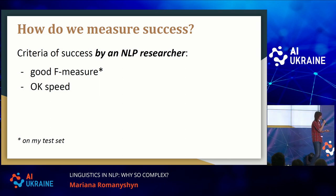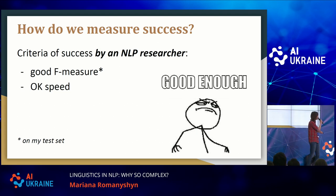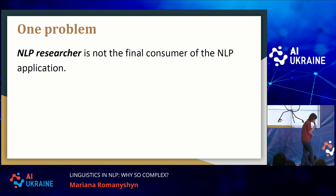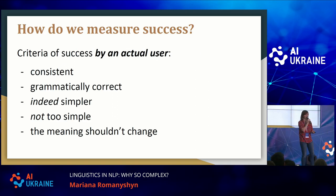How would we measure success? The criteria of success for an NLP researcher is simple: get a good F-measure on our test set — good precision and good recall. And we might say "good enough." But there is one tiny problem: you and I are not the final consumer of the NLP product we are developing. It's better that we actually ask the users of the NLP system what they actually want.